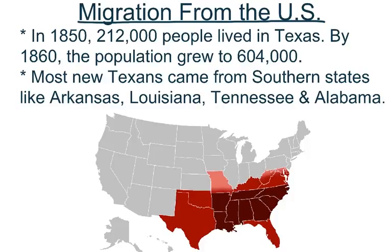While many people lived in towns, a lot of people lived in rural areas of Texas. In 1850, 212,000 people lived in the whole state. By 1860, just 10 years later, the population grew to 604,000, basically tripling the amount of people in just 10 years — a huge spike in the population of Texas.